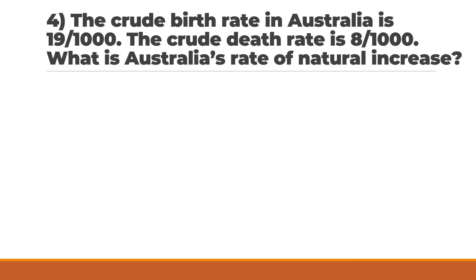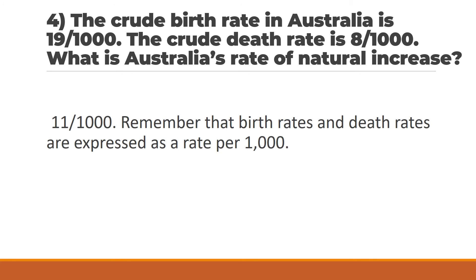Question 4: The crude birth rate in Australia is 19 per 1,000 and the crude death rate is 8 per 1,000. What is Australia's rate of natural increase? The answer is 11 per 1,000. Remember that birth rates and death rates are expressed as a rate per 1,000.